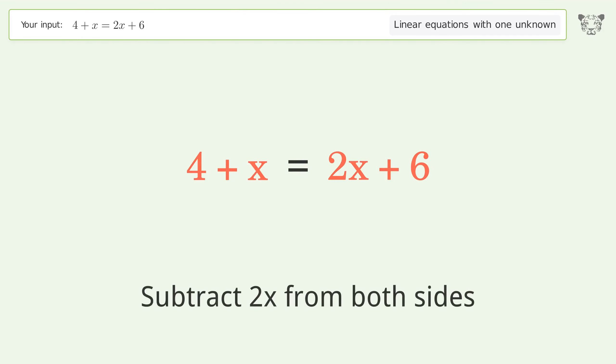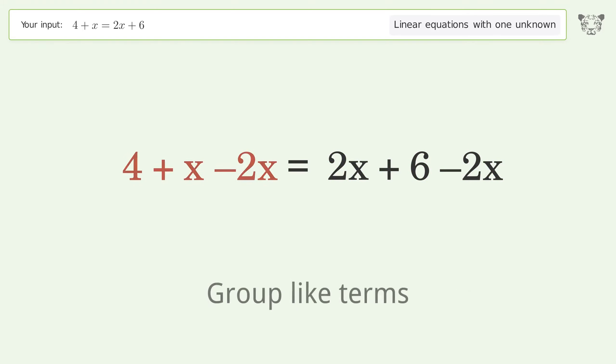Subtract 2x from both sides. Group like terms. Simplify the arithmetic.